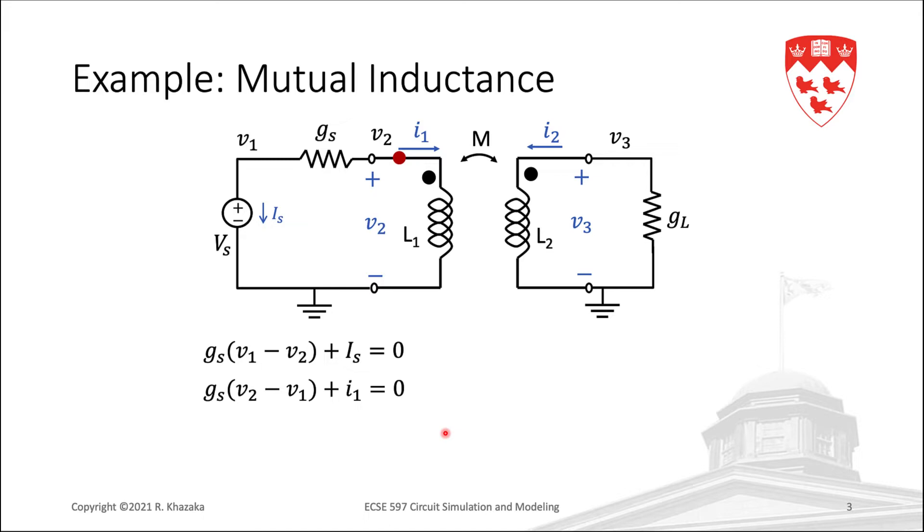Again, remember that in the MNA formulation, we always need to add the inductor current as a variable. Finally, we write the last KCL equation at node 3. Here we have the current in resistor GL, GL times V3, plus the current I2 in inductor L2.